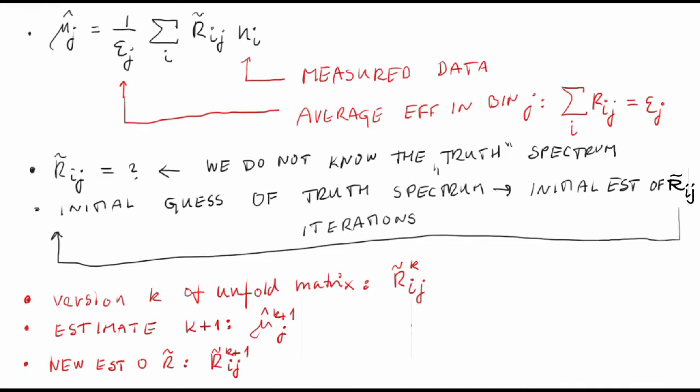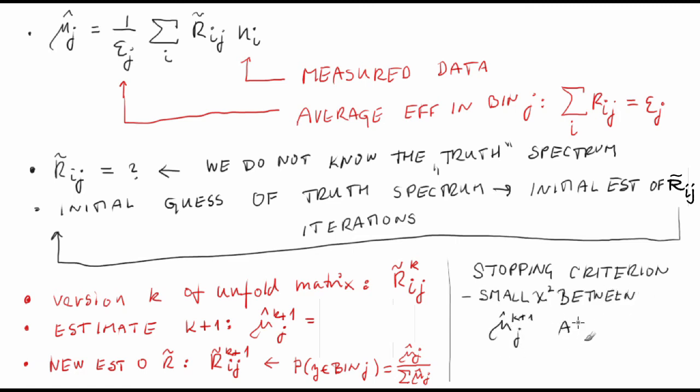In the construction, we use estimate of the probability for y to fall into the bin j is equal to mu sub j hat over sum over j mu sub j hat. A stopping criterion is a small chi-square between the versions k and k plus 1 of the unfolded spectrum.